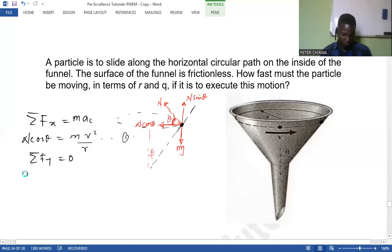Zero. I will have normal sin theta minus the weight equal to zero. So normal sin theta equal to mg. Right, so this is my second equation.